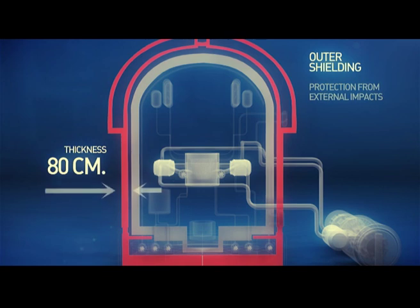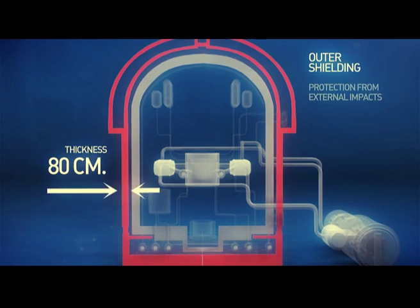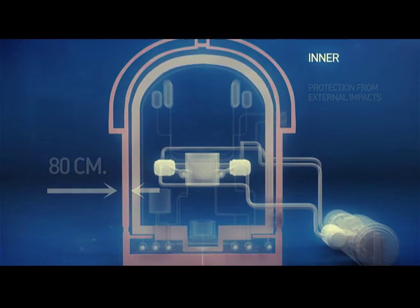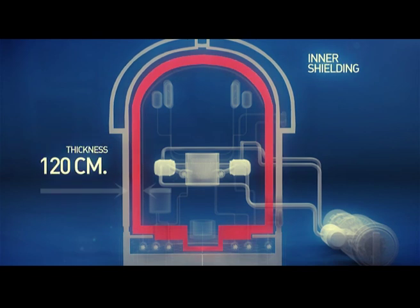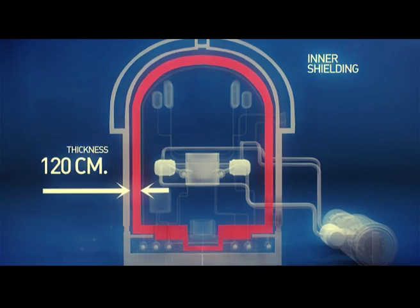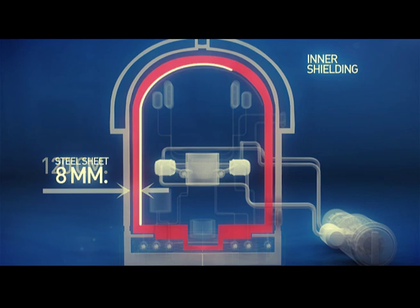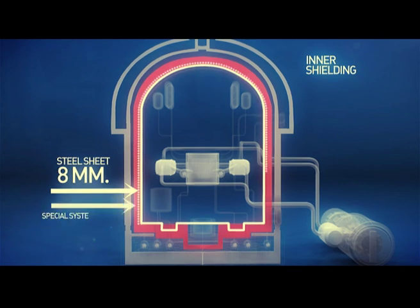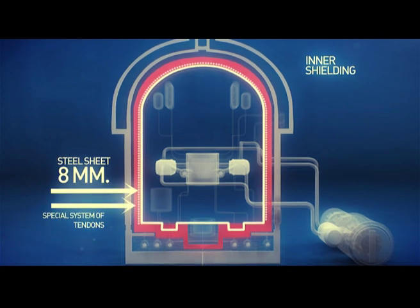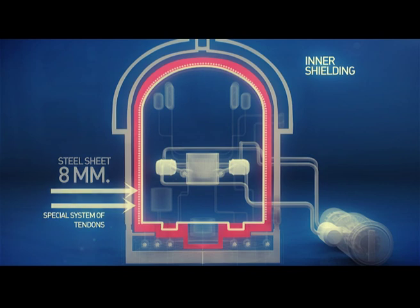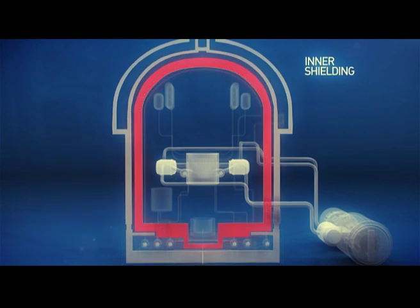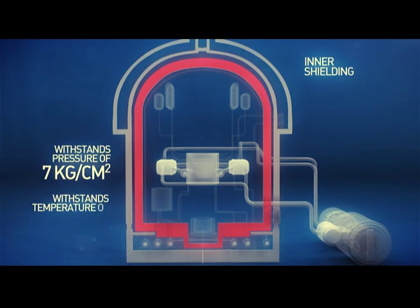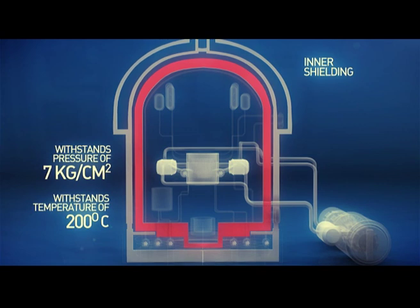The inner shielding is a concrete wall of 1 meter 20 centimeters in thickness. From inside, it is lined with steel sheet of 8 millimeters in thickness and is reinforced with special systems of wires strained inside the shielding. In essence, it is a contracting steel cocoon, which increases strength of concrete compression by nearly three times. The inner shielding can withstand a pressure of 7 kilogram per square centimeter and a temperature of up to 200 degrees Celsius.